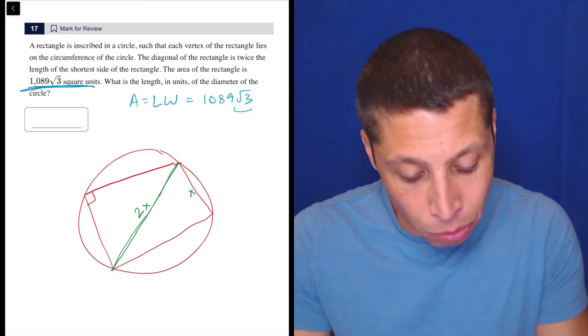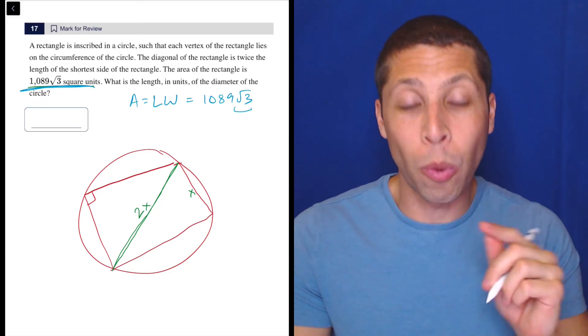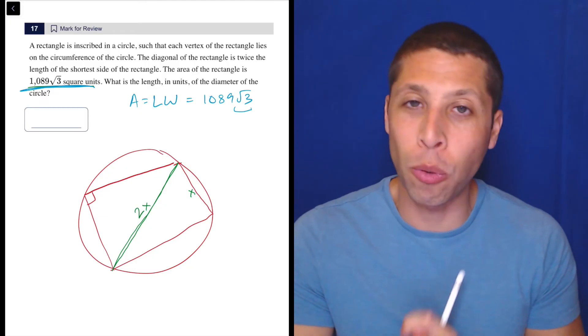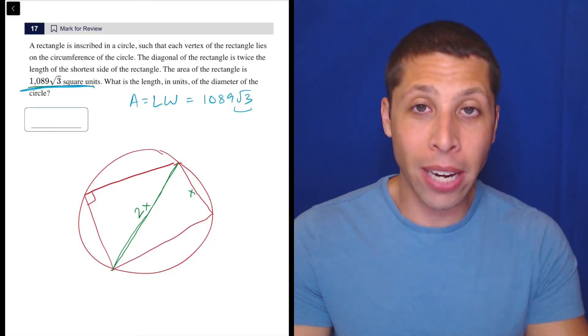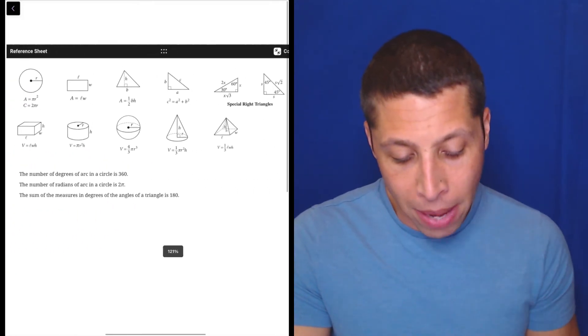In fact, the fact that there's a root 3 tells me I'm probably going to need to use one of the special right triangles, and this is why we really can't get flustered when we get to weird stuff. Remember, the reference chart exists. So if you are having difficulty figuring out how to solve a question, open that reference chart, and just kind of look at it like a menu.